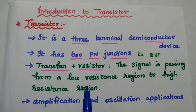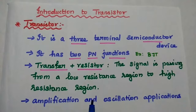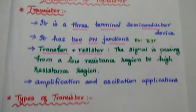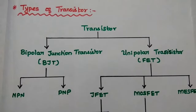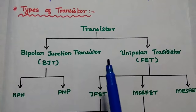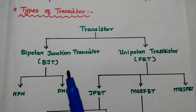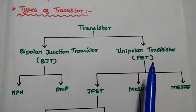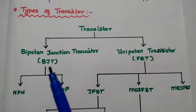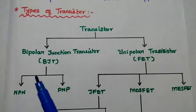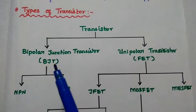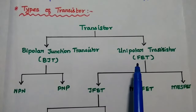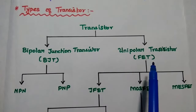This transistor is widely used for amplification and oscillation applications. Next, we are going to discuss the types of transistors. We can broadly classify transistors into two types: one is bipolar junction transistor, and the next one is unipolar transistor. Bipolar means the current conduction is due to both the majority and minority carriers in the transistor. But in unipolar, the current conduction depends only on the majority carriers.